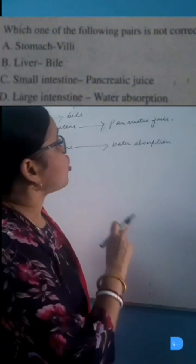Which of the following pair is not correct? You have to correct the statement. Option A is incorrect: stomach-villi, because the stomach does not contain villi. Villi are present in the small intestine. Option B: liver-bile, yes it is correct.